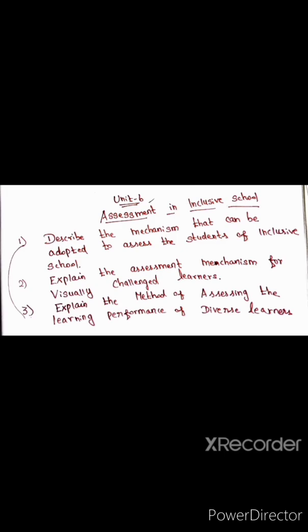Unit 6 is Assessment in Inclusive School. First, describe the mechanism that can be adopted to assess the students of inclusive school. Second, explain the assessment mechanism for visually challenged learners. In inclusive education, disabled students and normal students learn in the same school. That is inclusive education, and the question is how do you conduct the assessment.